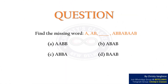In this video, let us discuss a question wherein we are required to find a missing word. Find the missing word in the given sequence. Options: A. AABB, B. ABAB, C. ABBA, D. BAAB.